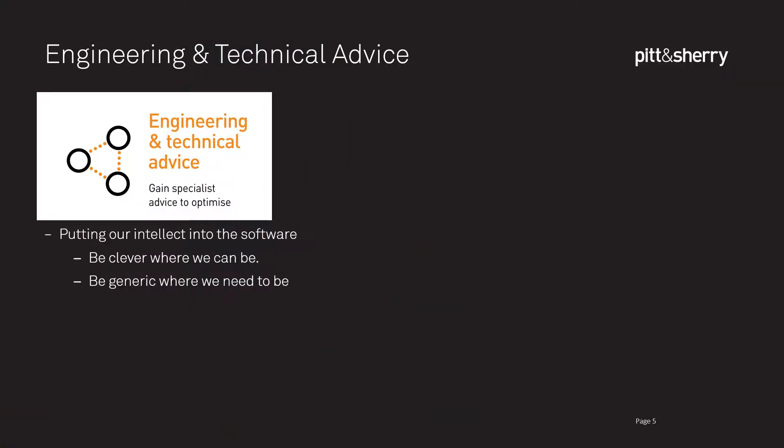When we talk about engineering and technical advice, we're talking about putting our intellect into the software. We do it by being clever where we can be and being generic where we need to be. There are a lot of asset management systems out there developed by software companies, but Pitt and Sherry is not a software company — we're an engineering company. Looking at asset management systems, there's a spectrum. At one end, there are very dedicated systems that know a lot about a specific asset type and have a lot of engineering knowledge and expert intellect.